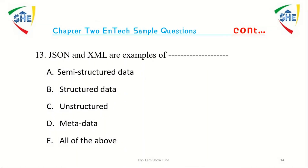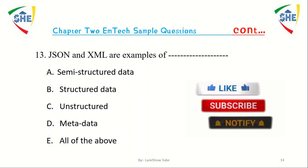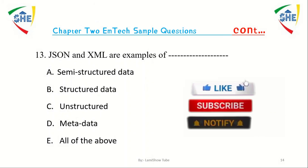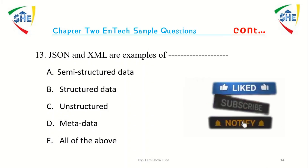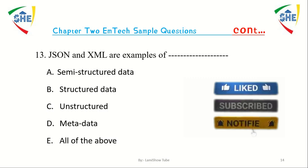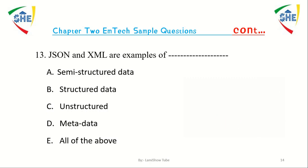Question number 12: JSON and XML (Extensible Markup Language) data are examples of dash. A) Semi-structured data, B) Structured data, C) Unstructured data, D) Metadata, E) All of the above.